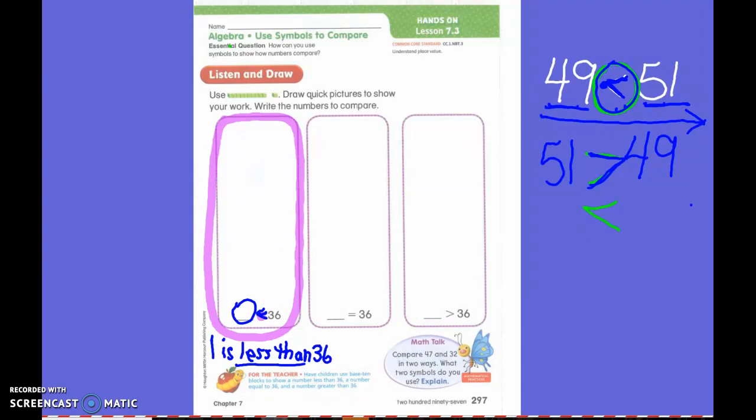Okay. Now, in the middle box, I want you to do a quick draw of a number that is equal to 36. We've talked about this before. If we have 18 students in the class, I want you to bring enough cookies for everyone in the class. So, how many cookies does that tell you to bring? Eighteen. Eighteen. The same number.